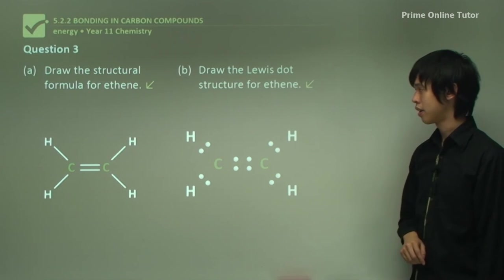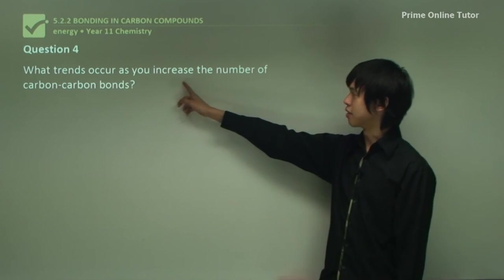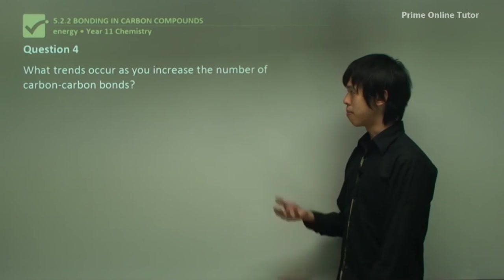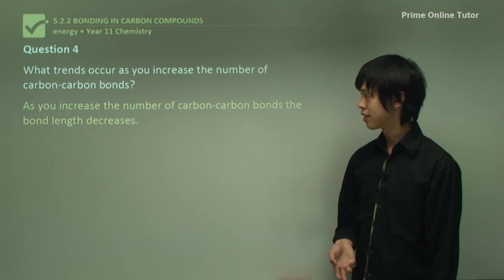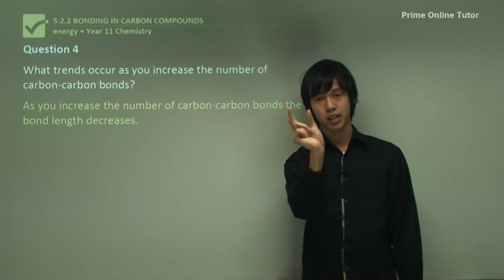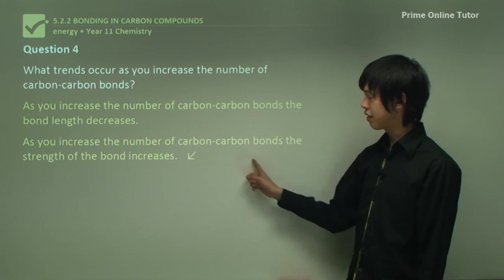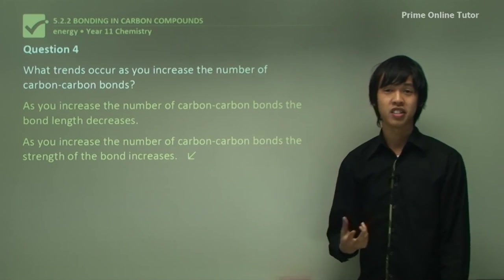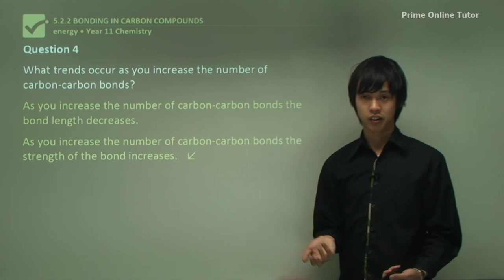Question: what trend occurs as you increase the number of carbon-to-carbon bonds? As you increase the number of carbon-to-carbon bonds, the bond length decreases — the bond contracts — and the bond strength increases, meaning more bonds results in a stronger overall bond.